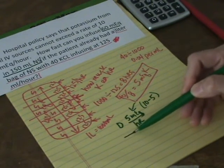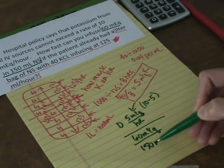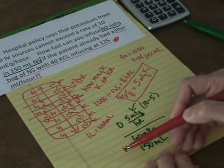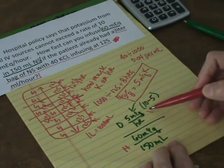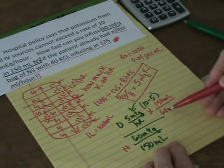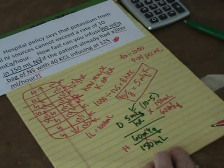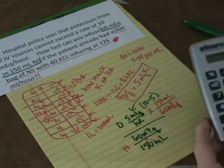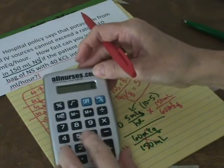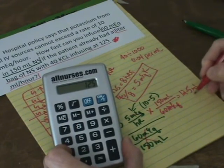So, 5 milliequivalents per hour and what you have is 60 milliequivalents in 150 mils. So, here's my desired, here's my have. And I'm going to save space and flip this, say 150 mils, 60 milliequivalents on the bottom. And look, this isn't even hard. The milliequivalents cancel out, you have mils per hour. 5 times, I don't know if you can see this, 150 divided by 60 is 12.5 mils per hour.